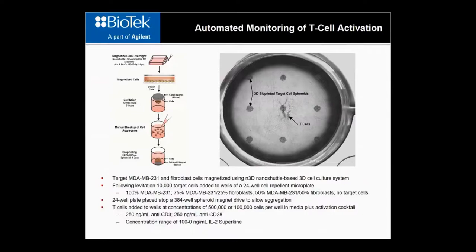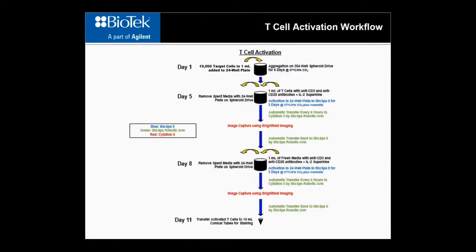We also needed to separate the T-cells and target cells at the end of the experiment to only move the T-cells onto the next portion of the process. To do this, we incorporated nano-shuttle paramagnetic particles from Greiner Bio-One. The particles were first attached to the target cells and aggregated together by placing the 24-well plates on top of a 384-well magnet, creating the target cell configuration visible in the slide. To test the effect of directed activation, we added varying concentrations of T-blast ranging from 100% target cells and no fibroblast to 0% target cells and 100% fibroblast. T-cells were then added along with anti-CD3, anti-CD28, and a range of IL-2 superkine to start activation.